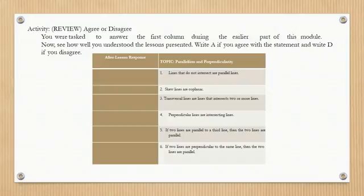Here is a review activity. You were tasked to answer the first column earlier in this module. Now see how well you understood the lessons. Write A if you agree with the statement and D if you disagree. Number 1: Lines that do not intersect are parallel lines.